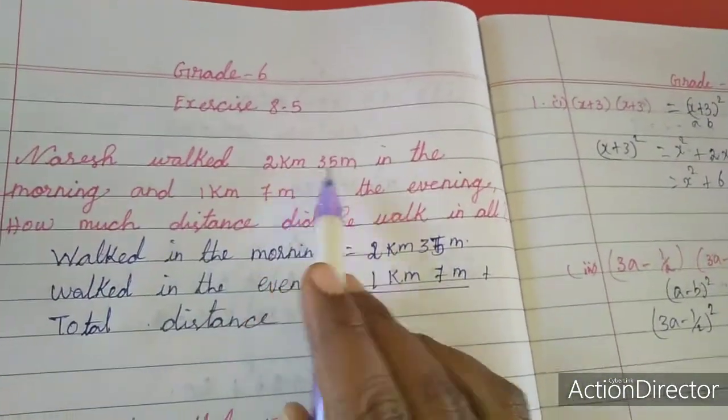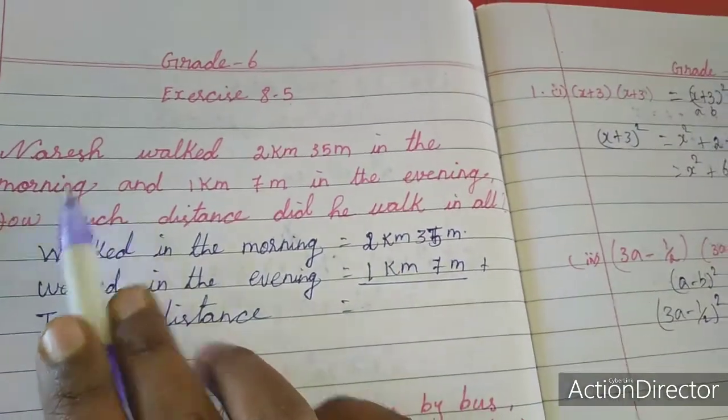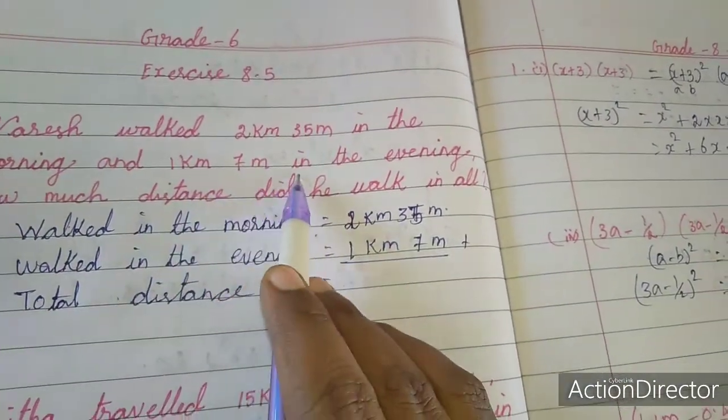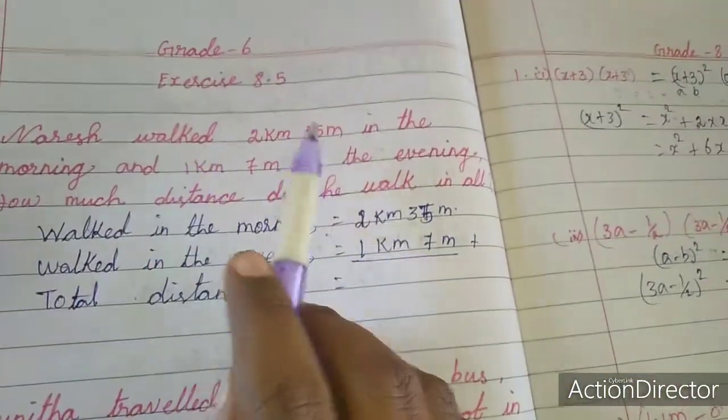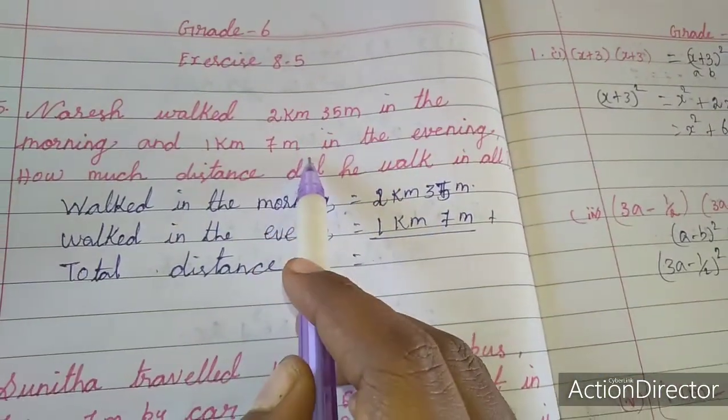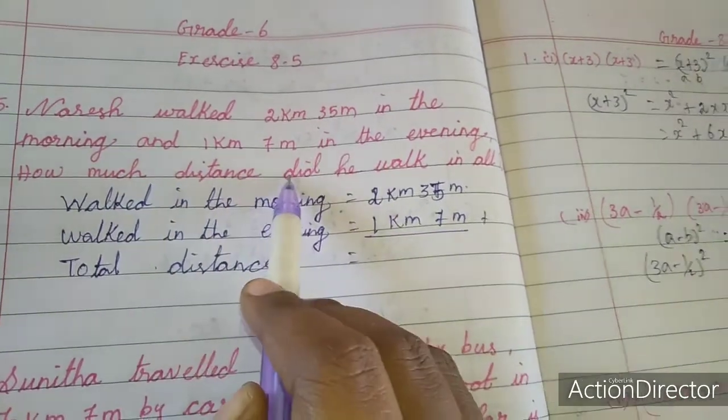See here 5th sum. Nariz walked 2 km 35 m in the morning and 1 km 7 m in the evening, how much distance did he walk in all? By the morning and evening, the total distance.